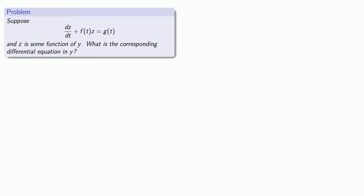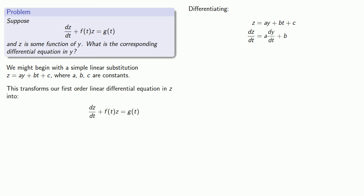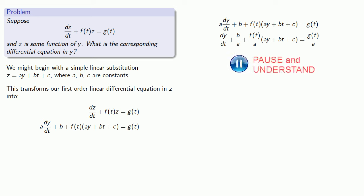Back to our problem: suppose we have a first-order linear differential equation and z is some function of y — what's the corresponding differential equation in y? We might begin with a simple linear substitution z equals ay plus bt plus c, where a, b, and c are constants. If we differentiate and substitute into our first-order linear differential equation in z, then simplify by merging constants and functions of t, dividing everything by a algebraically, we get a simplified result.